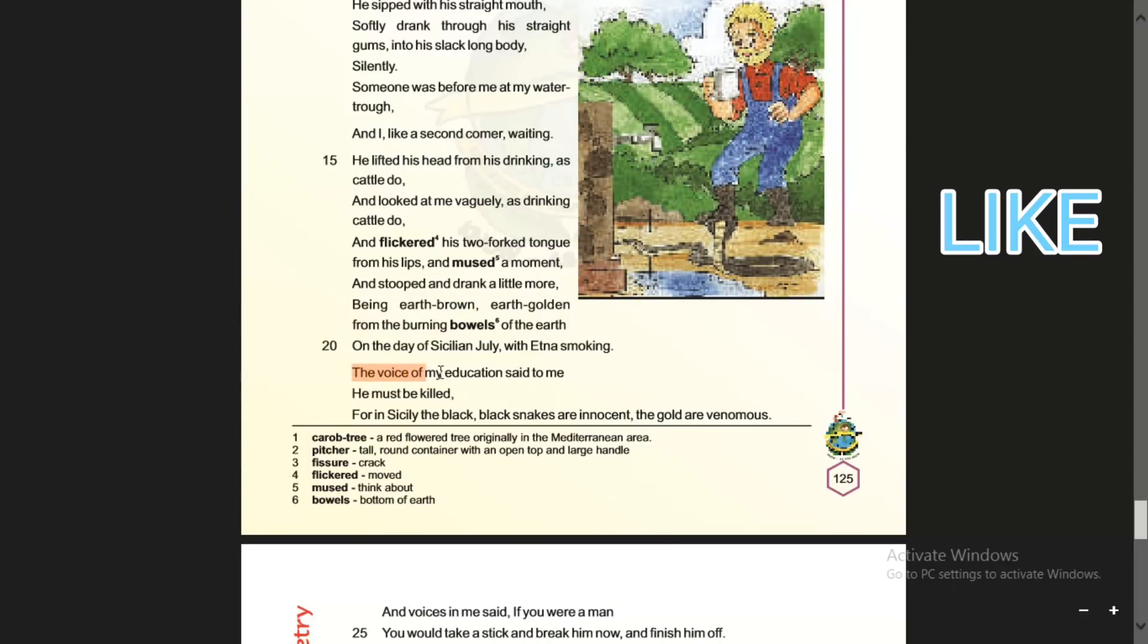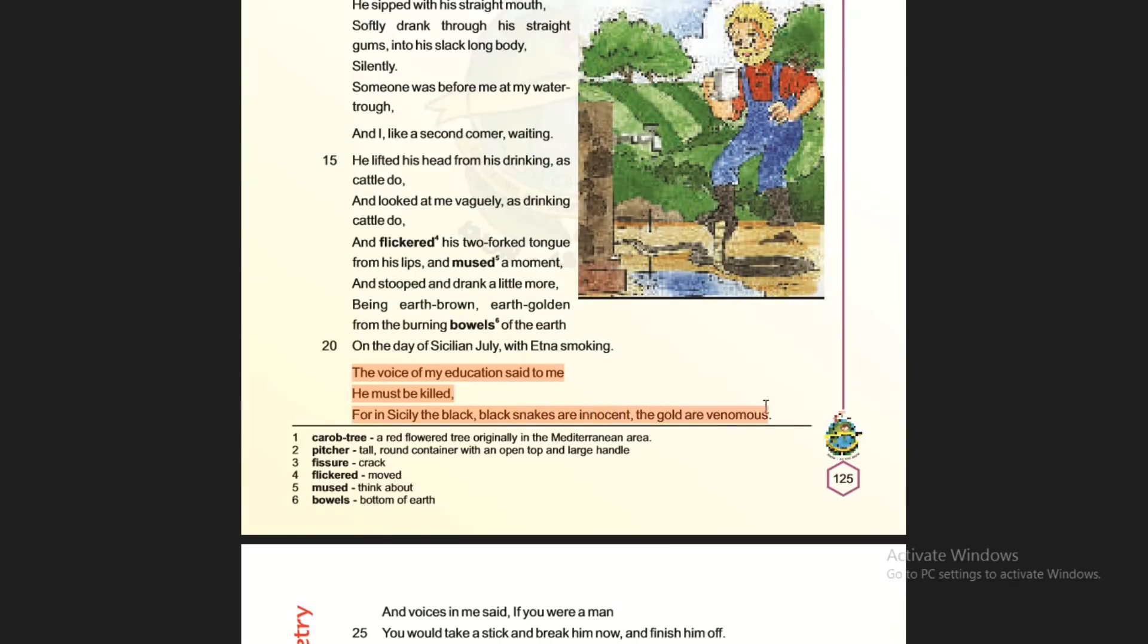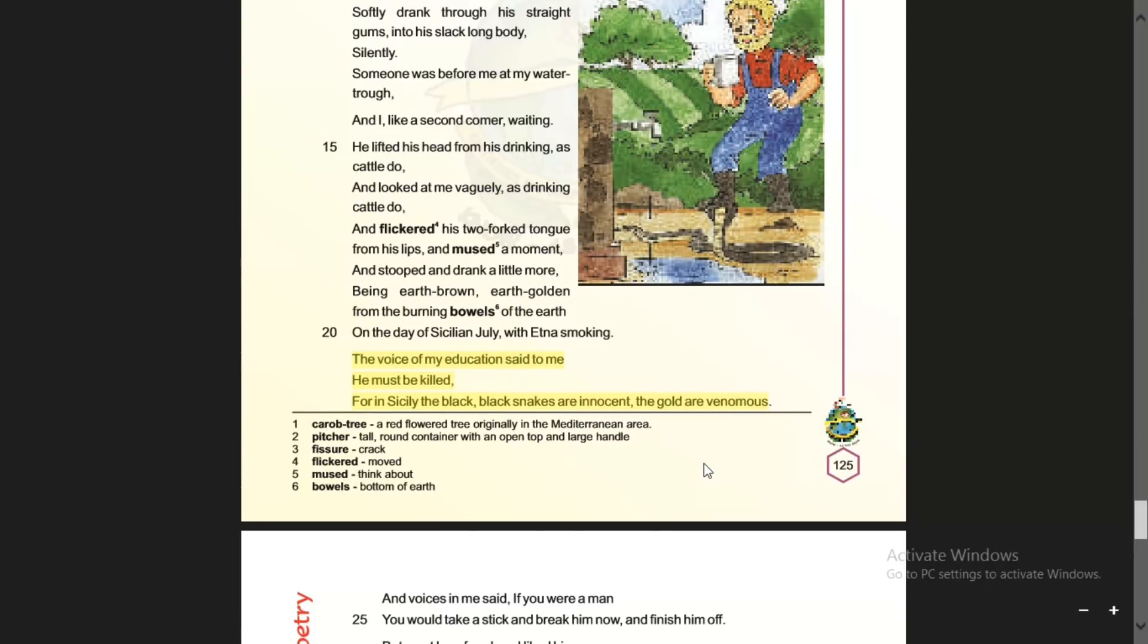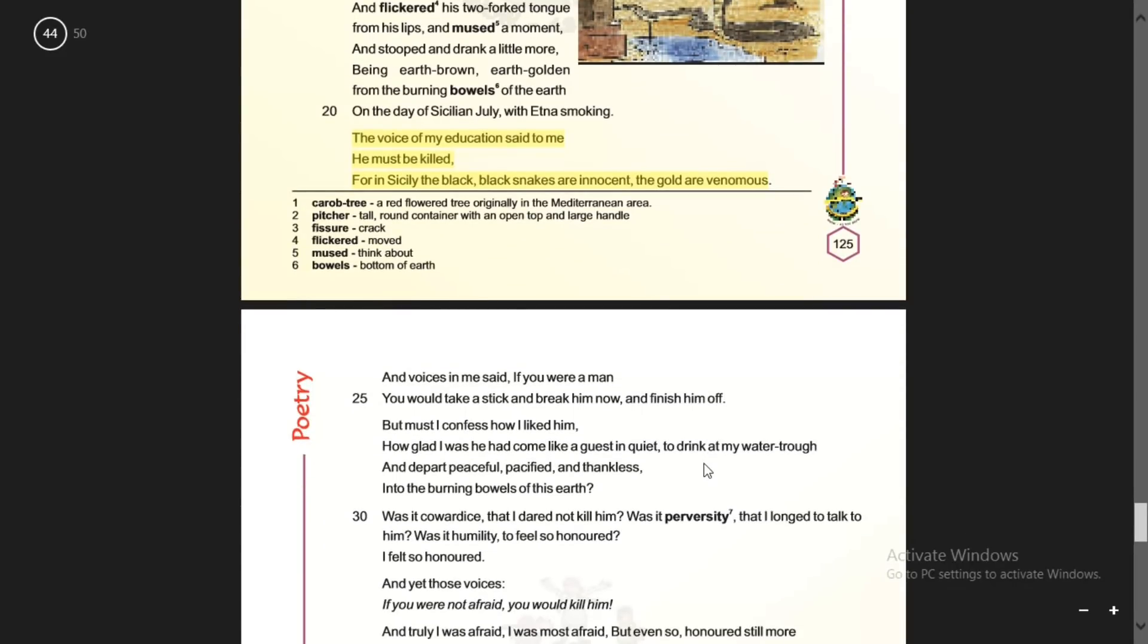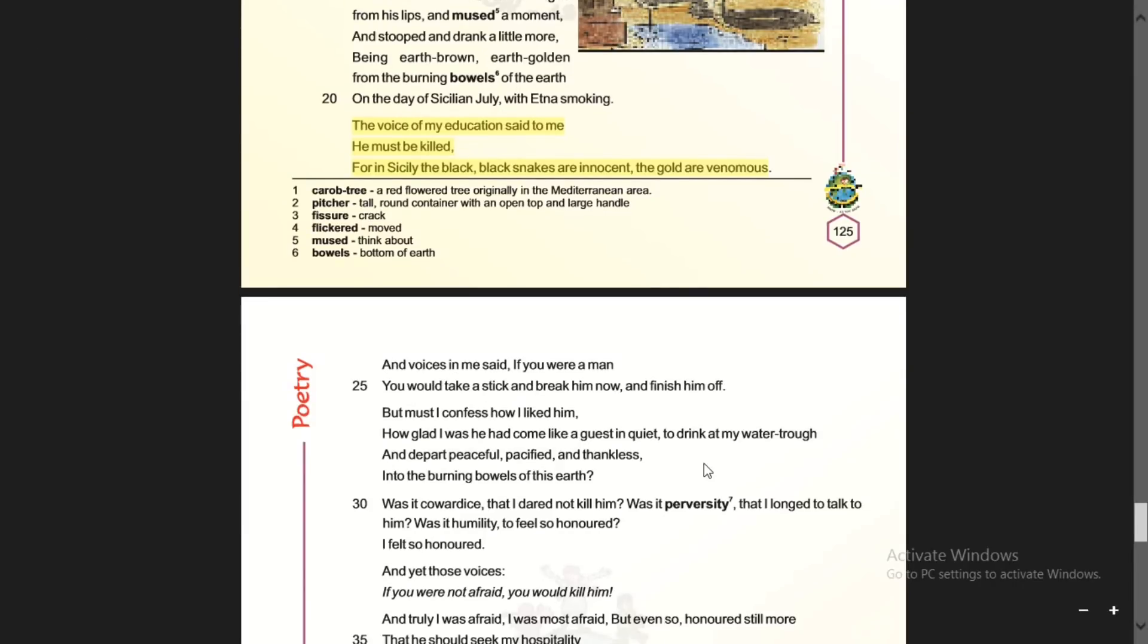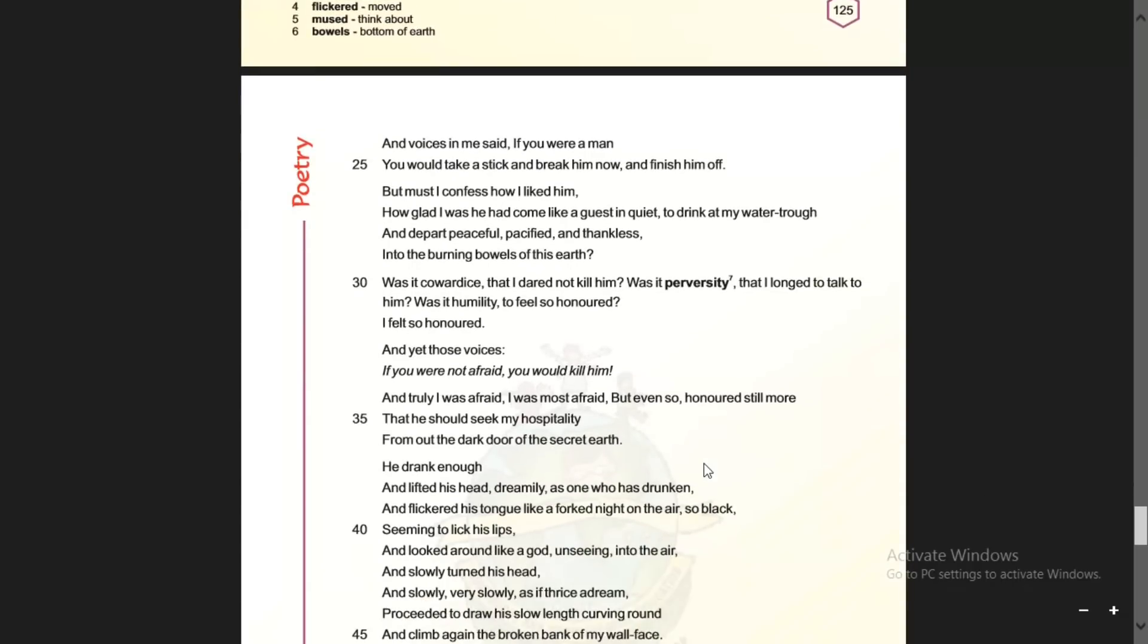The voice of my education said to me at that time, he must be killed. Kill the snake, for in Sicily the black snakes are innocent and the gold ones are venomous. This means that black colored snakes are less poisonous, and the gold colored snakes are very poisonous, very venomous.